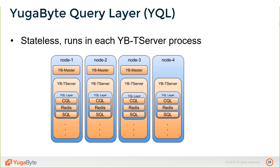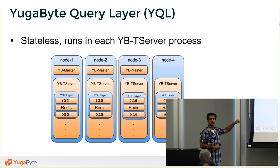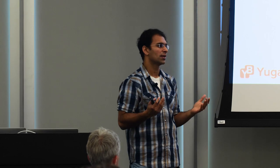The next piece is how you interact with this data. You use well-known languages through a pluggable, stateless query layer that runs on every node as part of the tablet server process. The query layer has adapters for Cassandra, Redis, and SQL Postgres. We can continue adding more access patterns because the requirements under the hood are the same. The key is not just writing data — it's whether it's replicated, backed up, and readable from a remote data center.